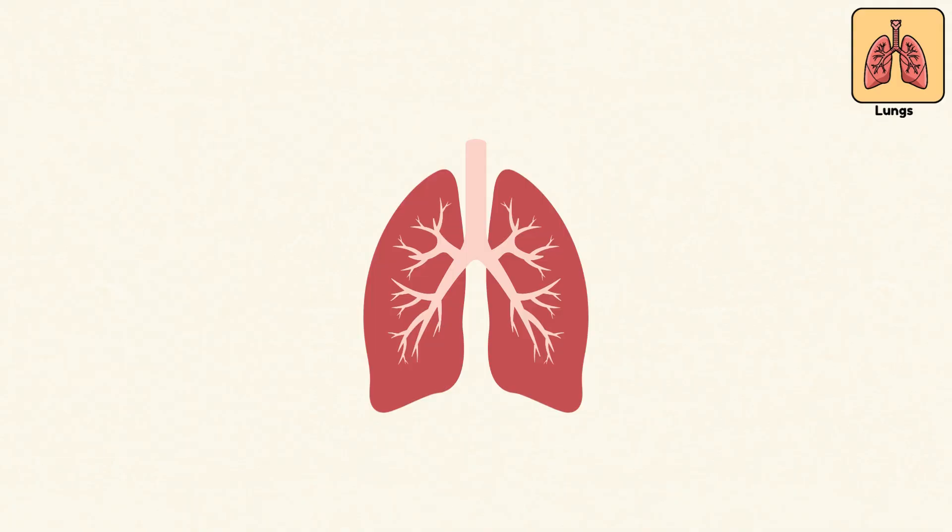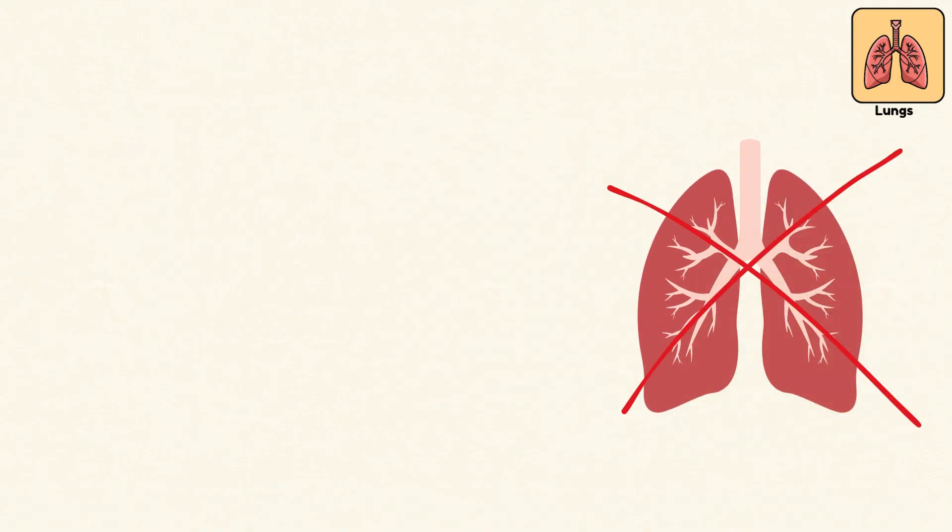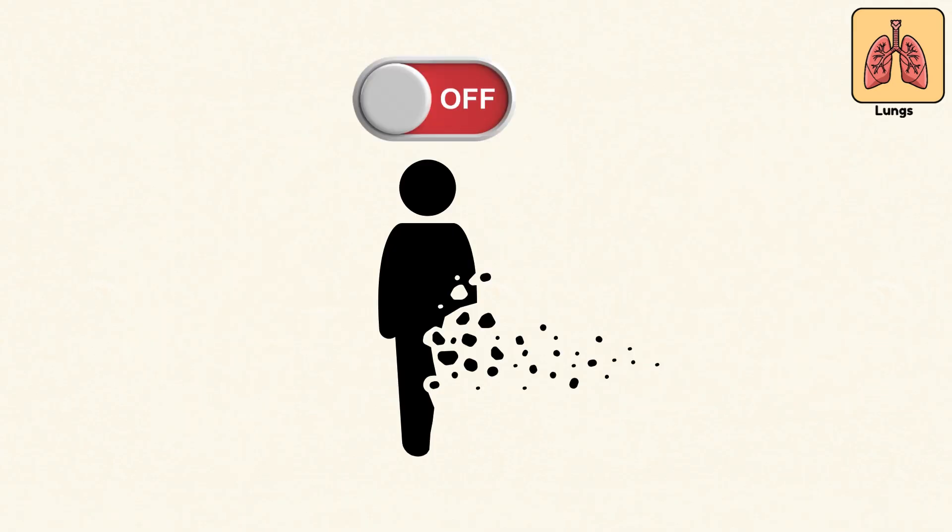Each lung is packed with millions of alveoli, tiny air sacs with a total surface area the size of a tennis court. Without lungs, oxygen never reaches your organs, and the whole machine shuts down.